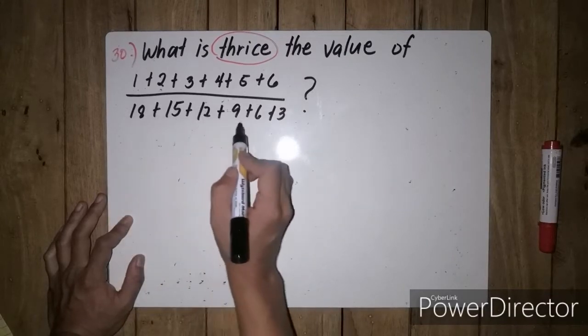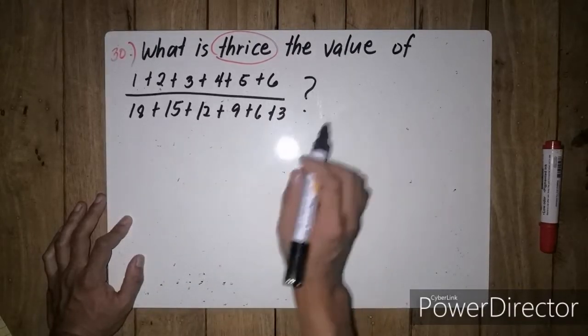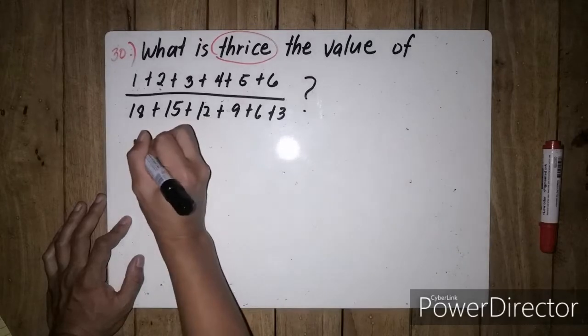Okay, because 18, 15, 12, 9, 6, and 3 are all divisible by 3. So, i-re-write lang natin.